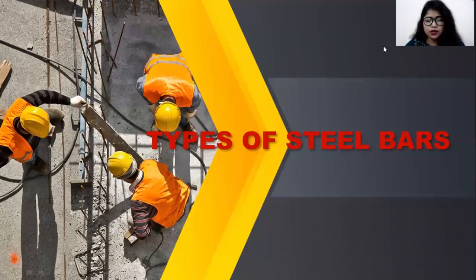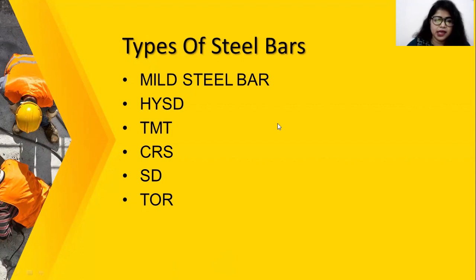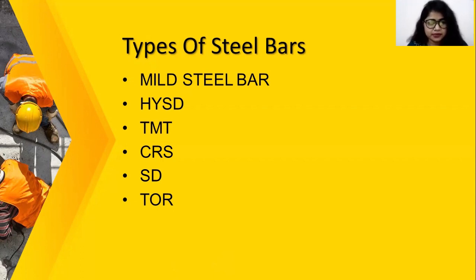First, we will know what are the types of steel bars we have. First is mild steel bar and second one is HYSD steel bar. Next, we have TMT steel bar and another one is CRS steel bar, SD steel bar, and the last one is the Tor steel bar.